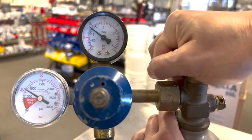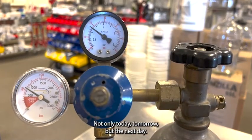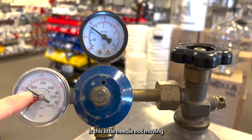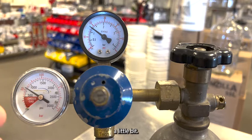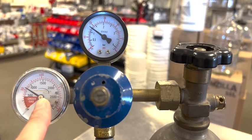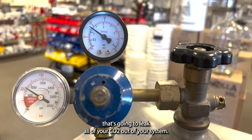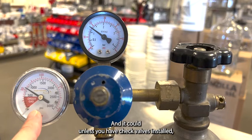Doesn't move at all. That's what you want to see, not only today, tomorrow, but the next day is this little needle not moving a little bit. Because even if it moves a tiny bit over time, that's going to leak all of your CO2 out of your system. And it could, unless you have check valves installed, it could flatten out your beer, which would be not good, less than ideal.